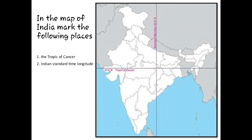In this map, we are supposed to mark the Tropic of Cancer and the Indian Standard Time Longitude. Both are marked in the map. You are supposed to mark them in a plain map and place it in your notebook.